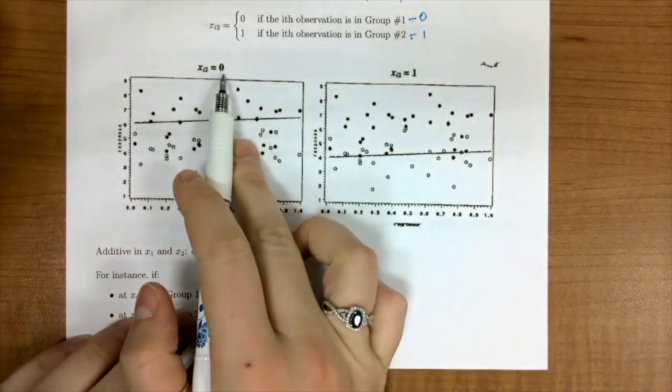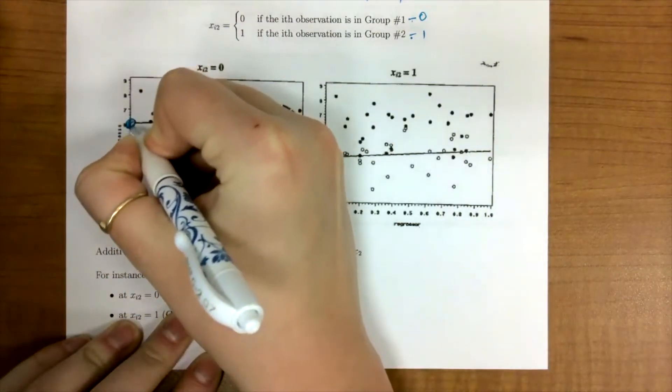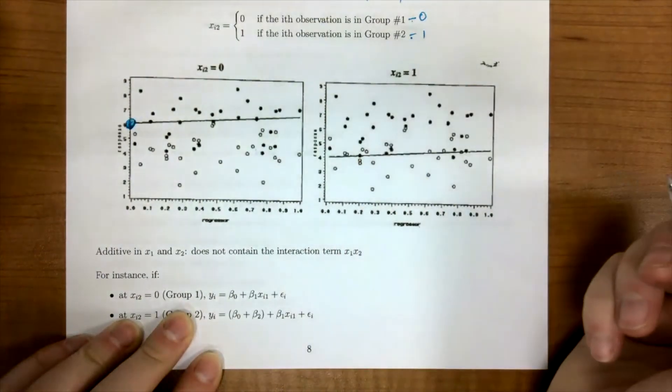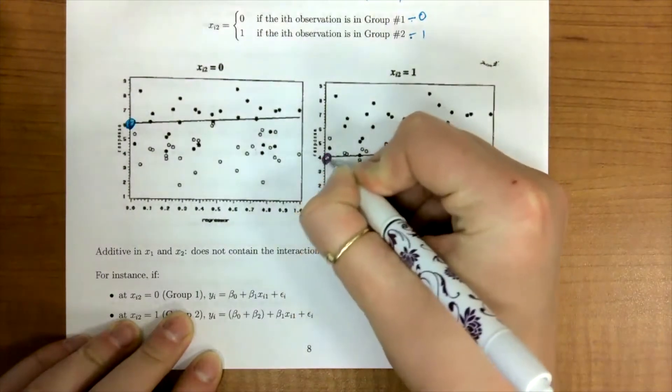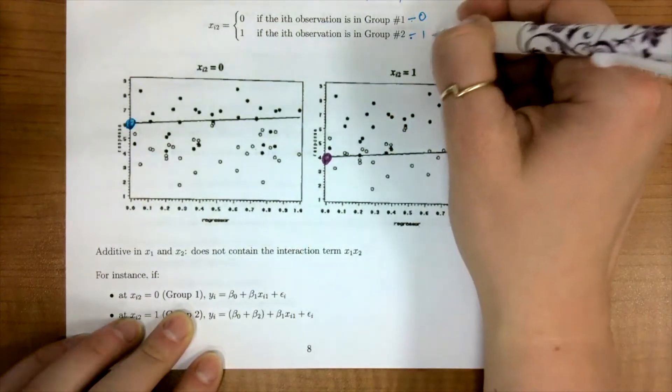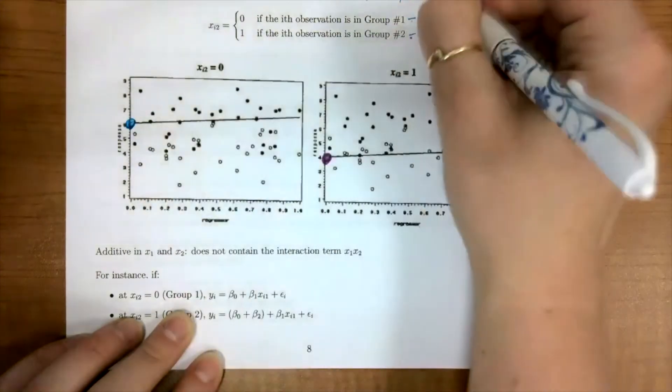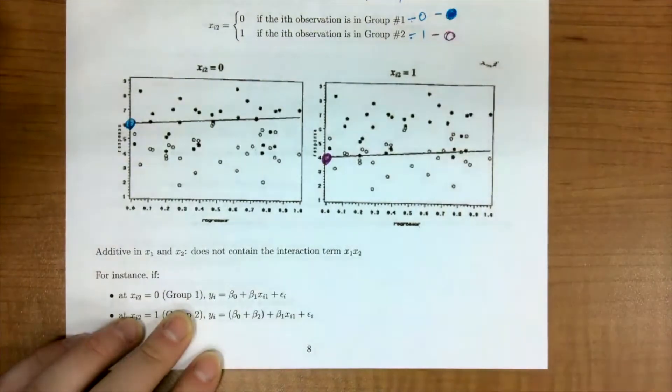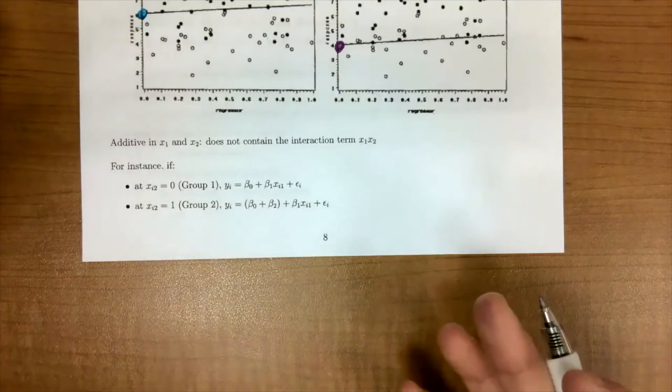So this model sets us up to allow to have two different intercepts for the two different groups, but we're assuming the slope is the same. So for group 0, the intercept is right here. But for group 1, this plot, our intercept is right here, this purple dot, where group 1 is the open circles, and 0 are the colored dark circles. This is an additive model in 1 and 2, and it doesn't contain an interaction term.